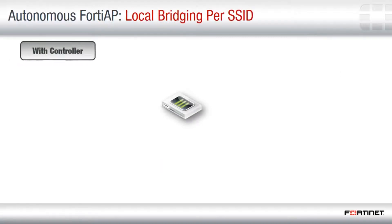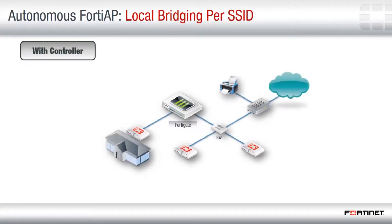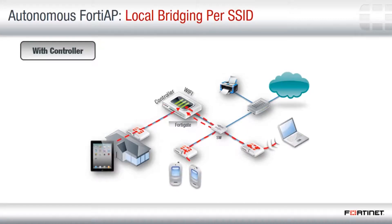In controller mode, traffic from the FortiAP is routed through a CAPWAP tunnel to the FortiGate, where it is de-encapsulated, inspected, and then routed out towards its destination. Although the CAPWAP tunnel provides security, there is an attendant increase in the traffic load at the FortiGate.